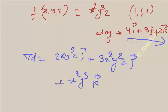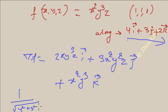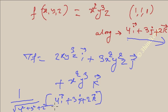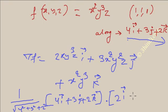The second step is to find the unit vector along the given direction. The unit vector is (4i + 3j + 2k) divided by the root of (4² + 3² + 2²), which is root 29. Now evaluate del f at the point (1,1,1): substituting x=y=z=1 gives del f = 2i + 3j + k.